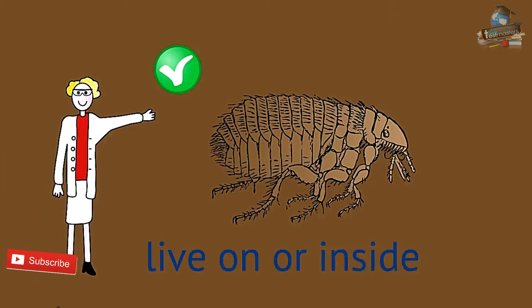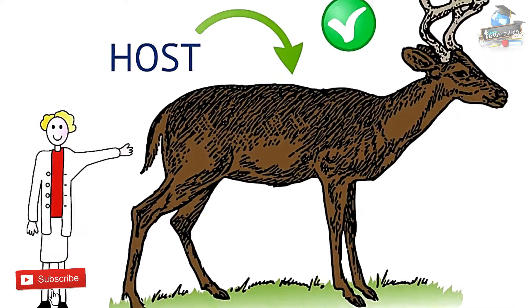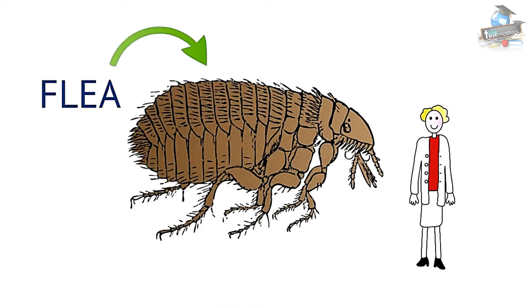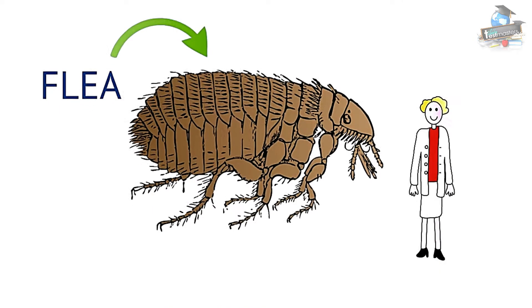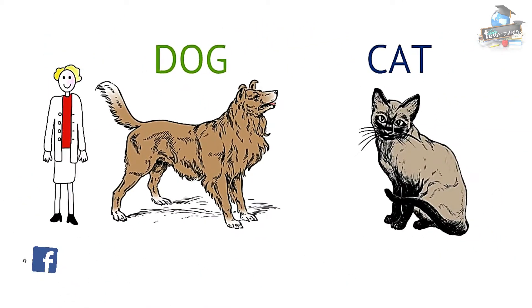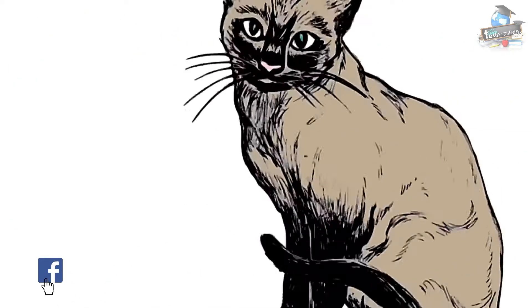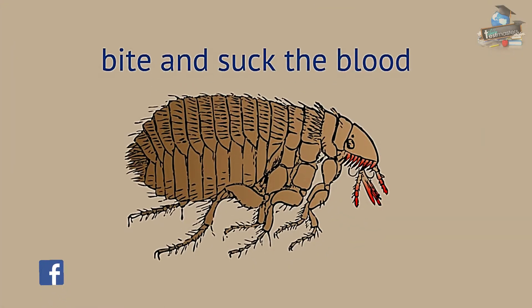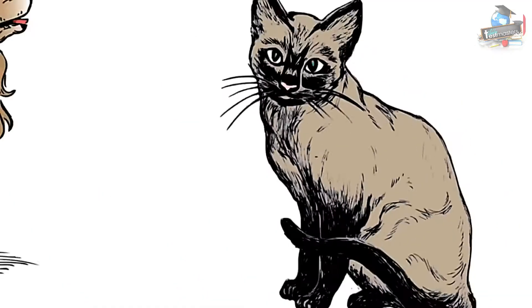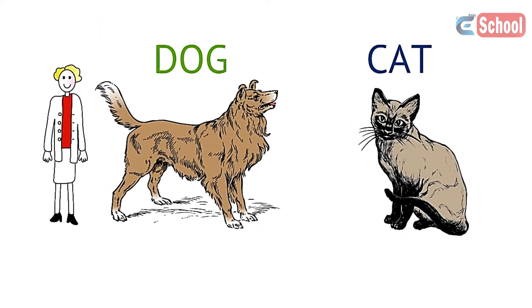The animal they live on and feed off is called the host. Fleas are an excellent example of a parasite — they live on the fur of an animal such as a dog or a cat, and they bite and suck the blood while the animal is still alive, feeding themselves and harming the dog or cat at the same time.